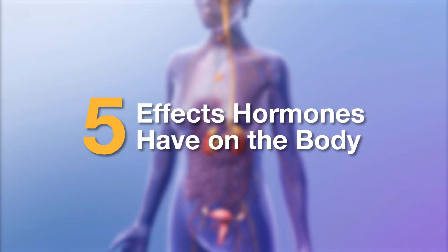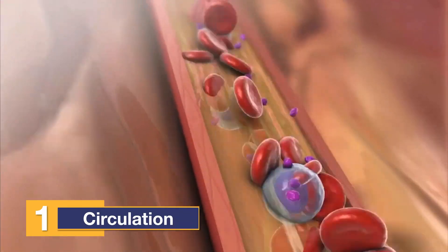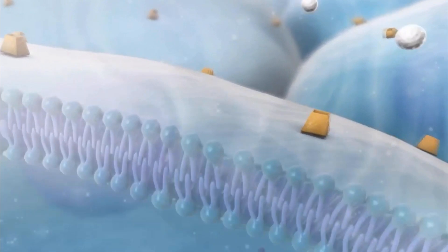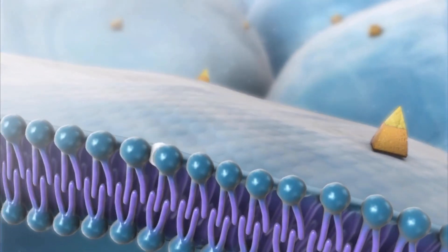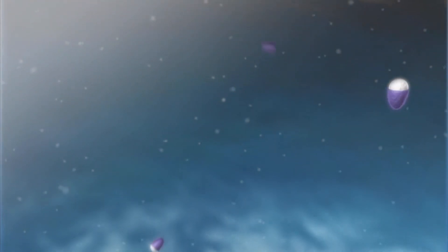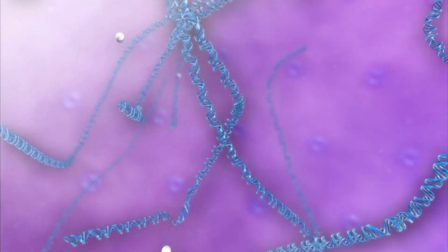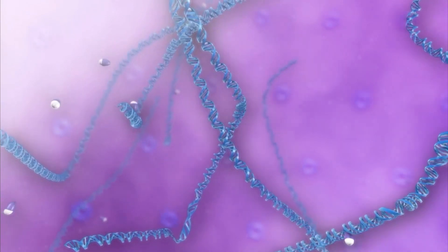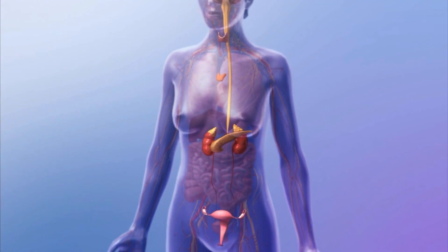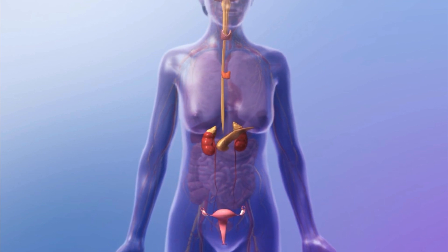There are five effects hormones have on the body. Endocrine glands secrete hormones directly into the bloodstream. Some hormones bind to receptors on the surface of target cells, while others enter the cells and bind to receptors in the cytoplasm or nucleus. The binding triggers a series of actions that change the physiological behavior of the cell, adjusting the functions of whole organs and regulating total body processes such as metabolism and growth.